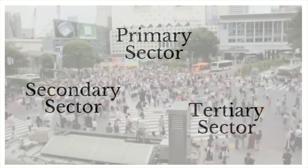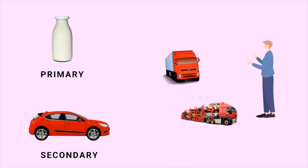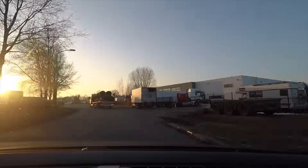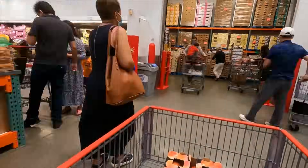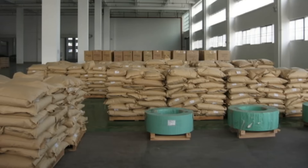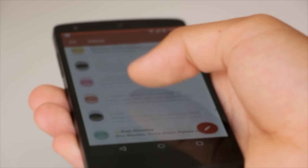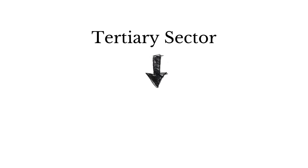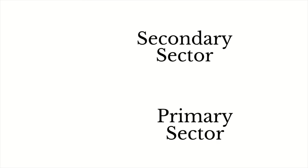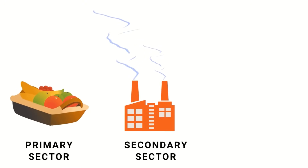The tertiary sector consists of activities that help the primary and secondary sectors develop. Whatever is produced in the primary and secondary sectors cannot reach consumers on its own — you need transportation for that. So transport is part of the service sector. Shopkeepers who sell goods from different places are also part of the service sector. This is why we also call the tertiary sector the service sector.